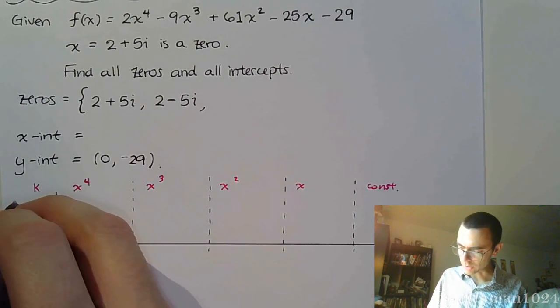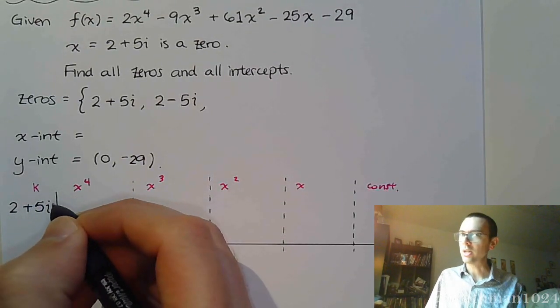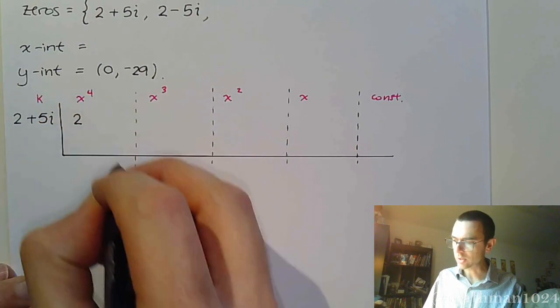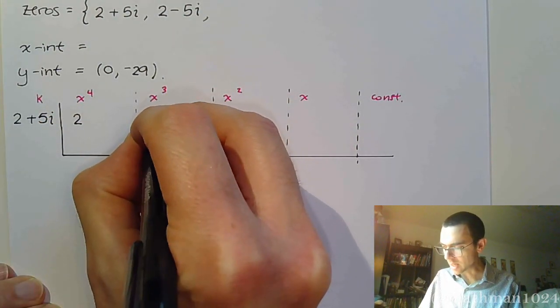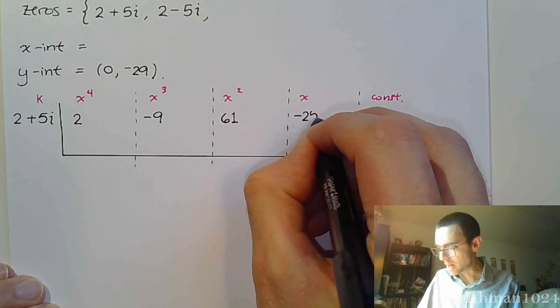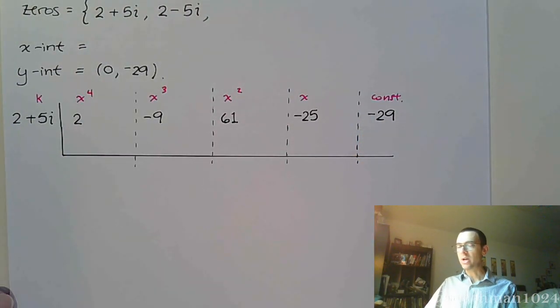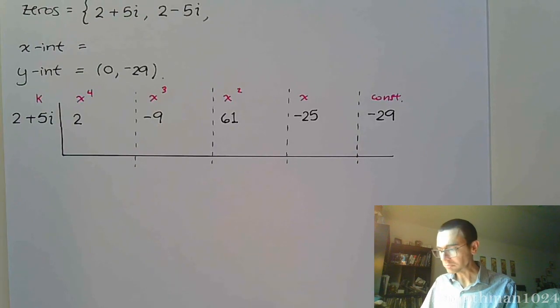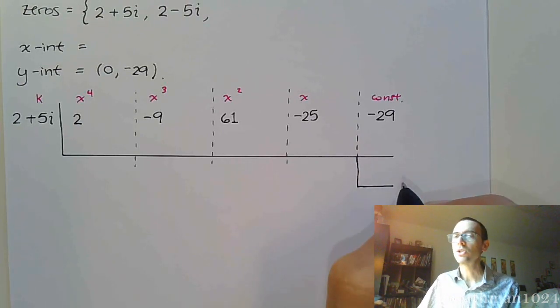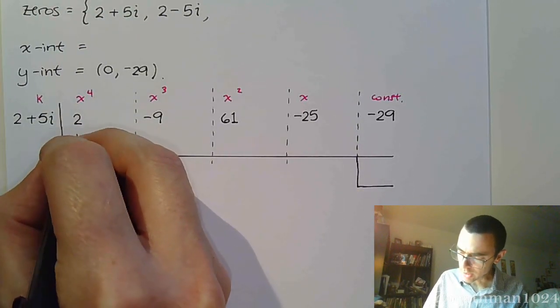So, there's my k, x^4, x^3, x^2, x, and the constant. You may even choose to do something like this: just kind of create a little bit of extra separation here so that these numbers don't bleed together and cause confusion. Because, again, those complex numbers are going to be twice as wide because they have two different components. Alright. So, my k value, I'm going to start with 2 + 5i. You can already tell this is going to be a good one.